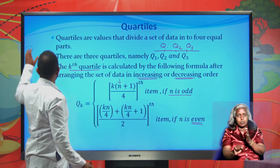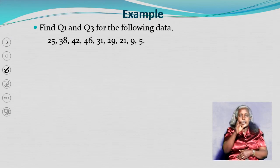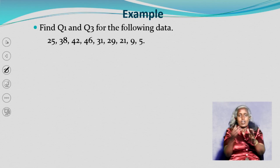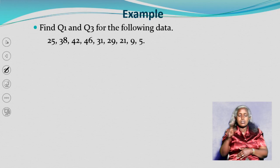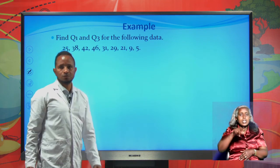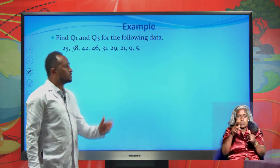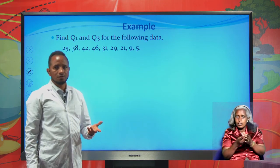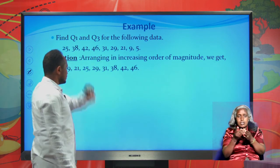Let's see an example. Find quartile one and quartile three for the following data: 25, 38, 42, 46, 31, 29, 21, 9, 5. We are asked to find Q1 and Q3. To find these values, first you have to arrange this set of data in either increasing or decreasing order. So let's arrange this data in increasing order.